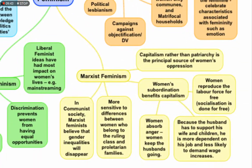The third feminist theory is Marxist feminism. Marxist feminists believe that capitalism, rather than patriarchy, is the principal source of women's oppression. Radical feminists believe that patriarchy — men being in a dominant position — is the reason women are subjugated. But Marxist feminists believe that capitalism, the system with two types of classes — the bourgeoisie who own the factors of production and the proletariat class who are the laborers — itself gives rise to the problem of gender inequality. In a communist society, Marxist feminists believe that gender inequalities will disappear.